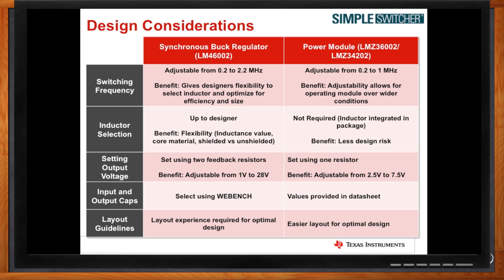For inductor selection, with the power module it's already included in the package so you don't have to worry about it. For setting output voltage, you need a feedback resistor with a regulator solution; with a module you only need one resistor. The benefit of the buck regulator is a wider output range — all the way up to 28 volts for up to 60-volt input. The power module only goes up to 7.5 volts but it is a plug-and-play solution. For input and output caps, we suggest using Webbench for the regulator, while power module components can be selected straight from the data sheet. For layout guidelines, you can optimize your design for either regulator or module.